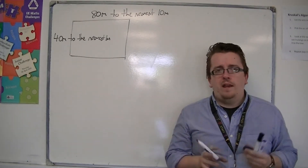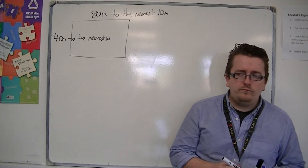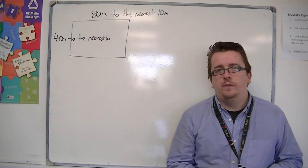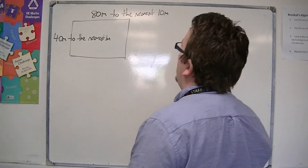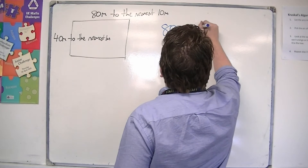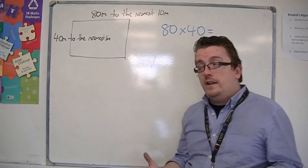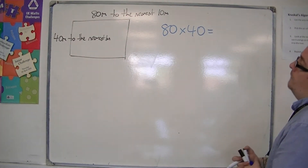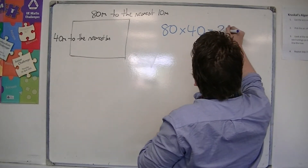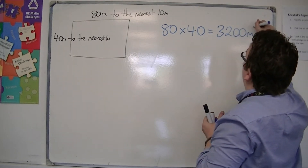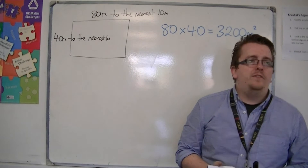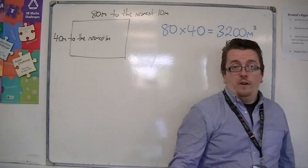So he's done these two measurements, and then we say to ourselves: let's work out what the area is. The area is 80 times 40 — we measure the width by the length to get the area of a rectangle. 8 times 4 is 32, so we have 3,200 square metres of land. And that's what the farmer says.